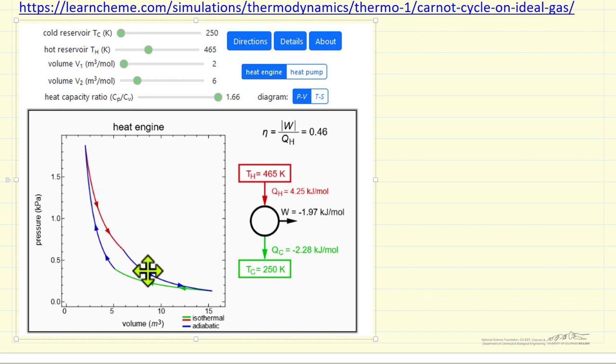For a heat engine, we're adding heat at high temperature, that's shown here, and releasing heat at lower temperature, and getting work out. Efficiency is how much work we get out, absolute value divided by the heat added.